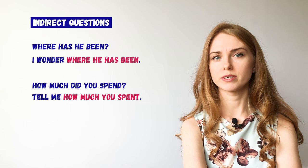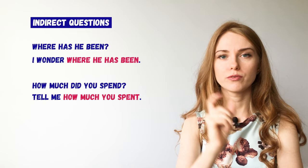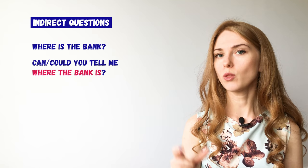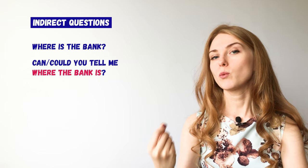Notice the word order in indirect questions. The word order is direct, which means we do not put the auxiliary verb before the subject — it's the same as in an affirmative sentence. Indirect questions can also be introduced by a question phrase such as 'Can you tell me?', 'Could you tell me?', 'Do you know?' For example: 'Where is the bank?' is a usual question. 'Can you tell me where the bank is?' is an indirect question. We don't say 'Could you tell me where is the bank?' — we say 'Could you tell me where the bank is?'